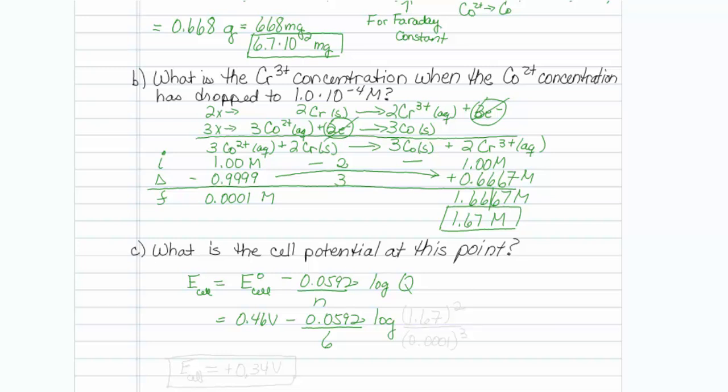My log of Q, I need to take my chromium concentration, 1.67, and I need to square that, and I need to take my cobalt concentration, which is 0.0001, and I need to cube that. So let me put that all into my calculator, and I get that my voltage is plus 0.34 volts when all is said and done. Well, that's how you do that.